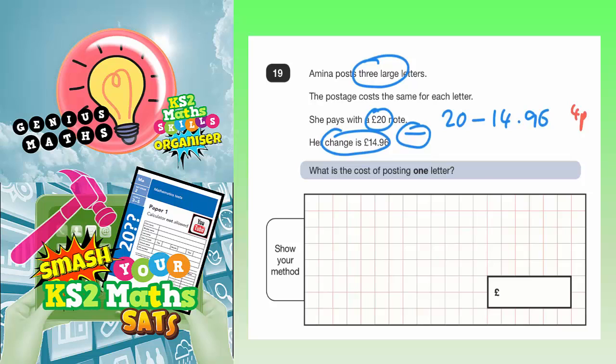Then, obviously, we've got to get up from £15 to £20, which would be another £5. So, it's basically going to be £5.04.